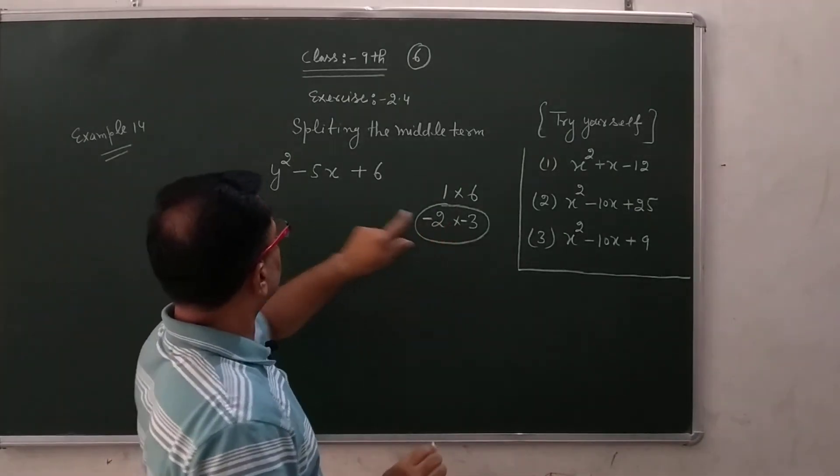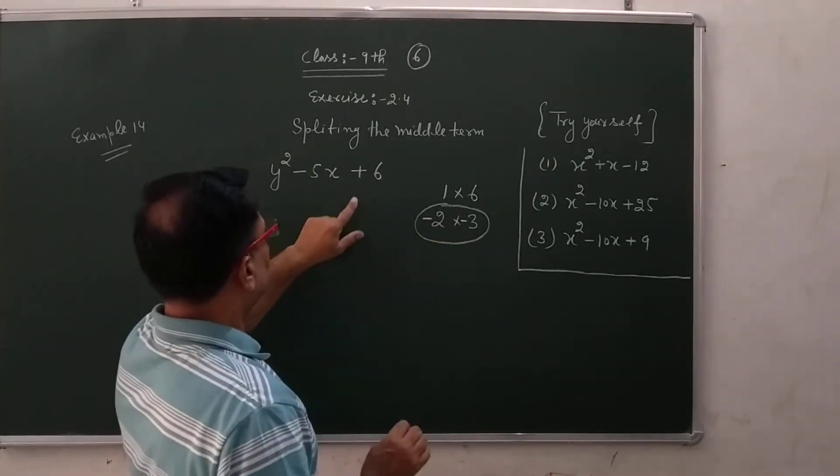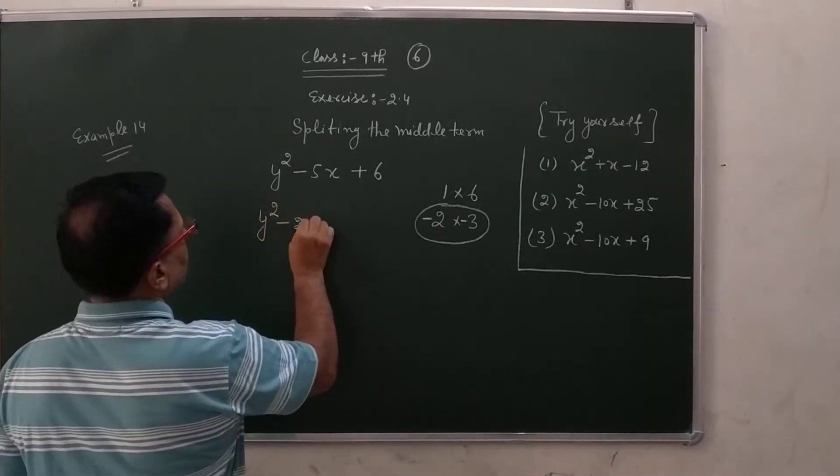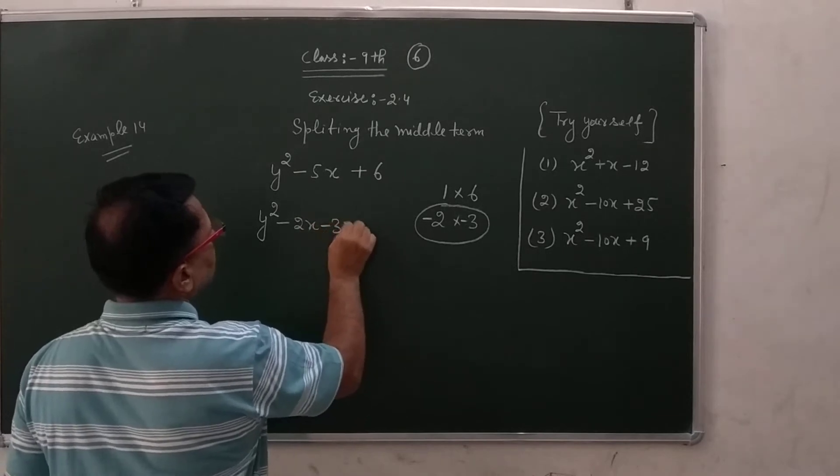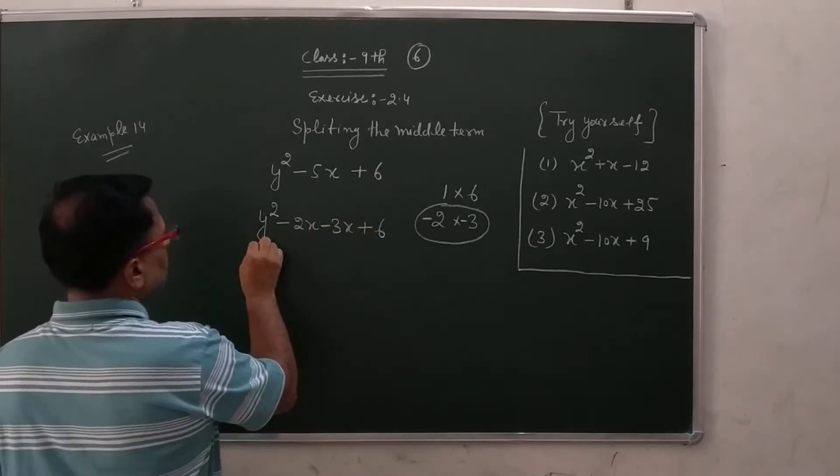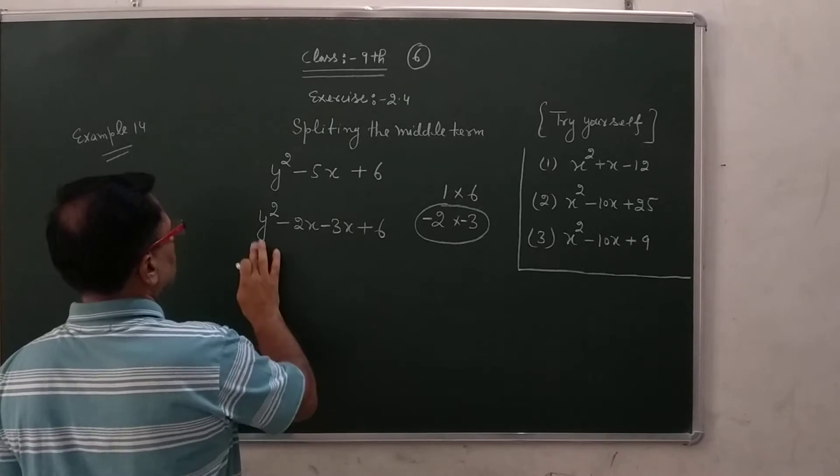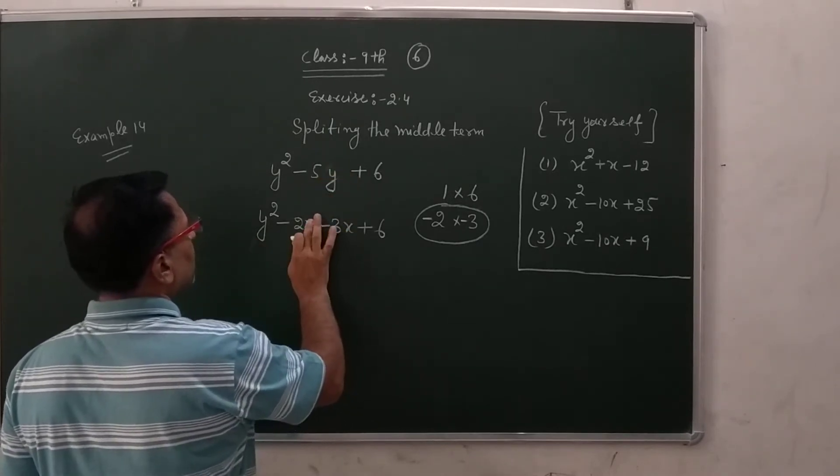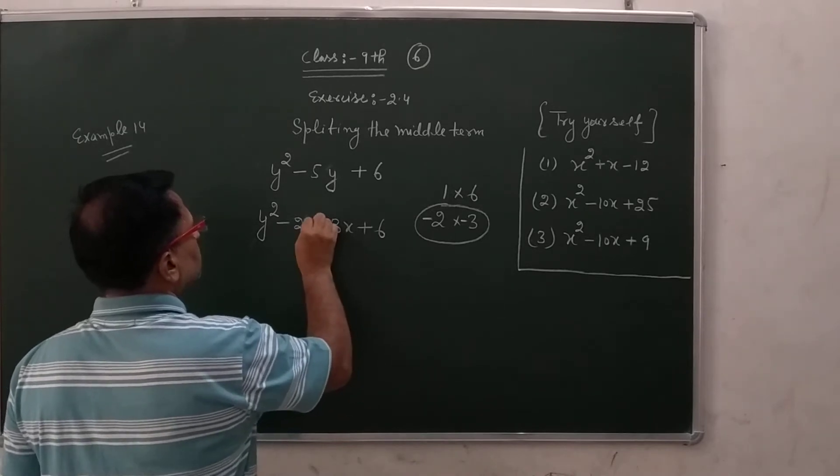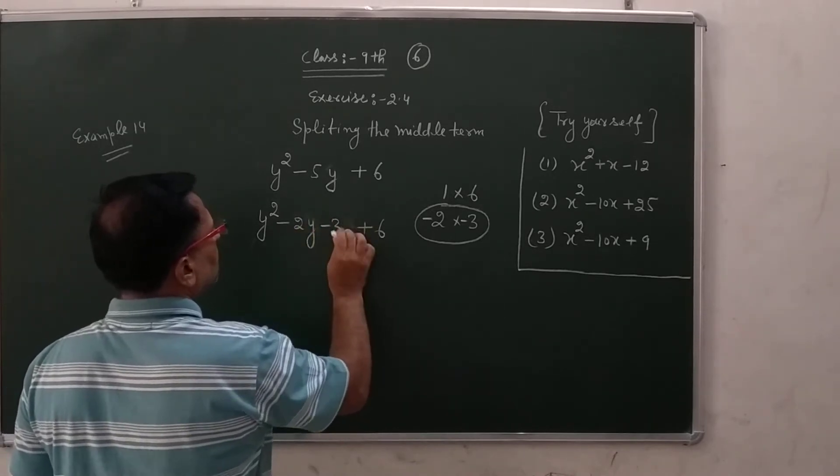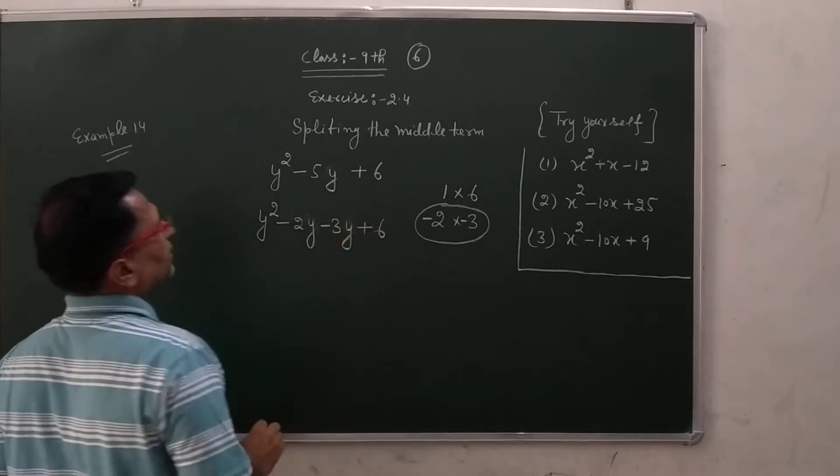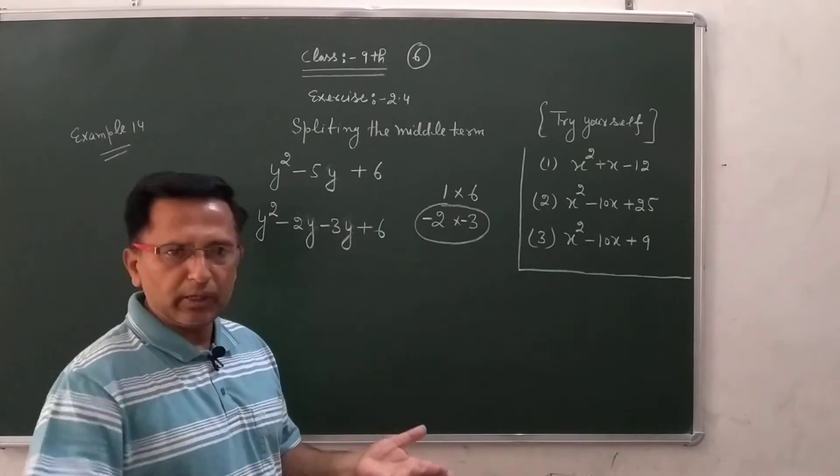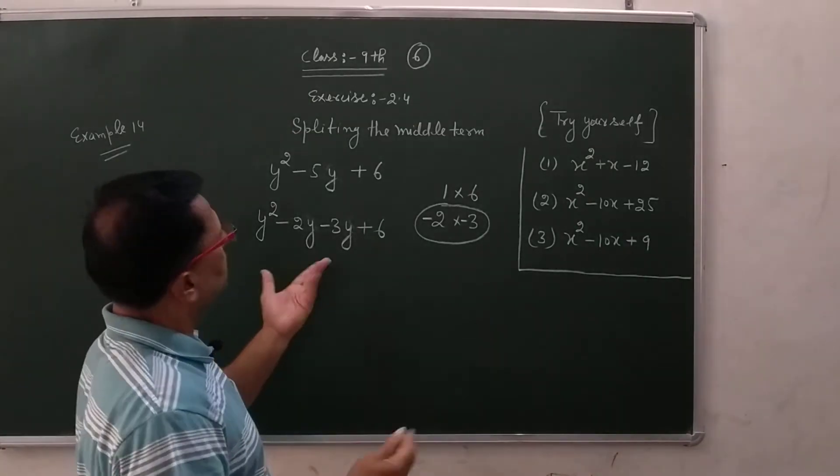Yeh dho digit isko satisfy karenga hai. So yeh y square, minus two x, minus three x, plus six. So beta pehle is, sorry, not x here. Not. It is y. Because our polynomial is in y, not x. Sorry. It is the variable is what? Y. Not x here. But variable may be change. Any variable you have in this question. You say, write k square minus five k plus six, p square minus five p plus six, aap kaise kare. So yeh aapar y variable hai.